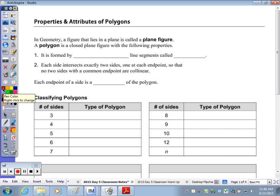At the top of the page, we're going to look at the properties and attributes of polygons. In geometry, a figure that lies in the plane is called a plane figure.